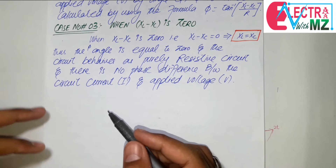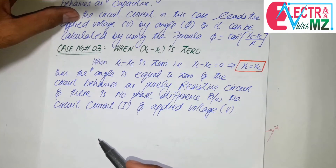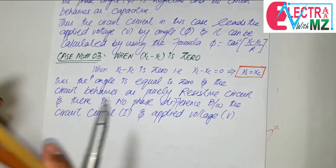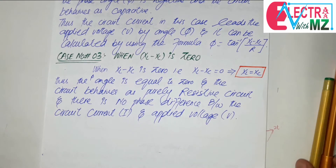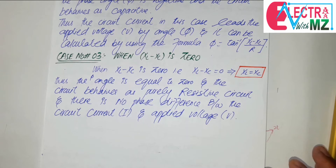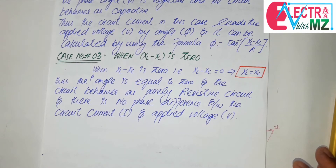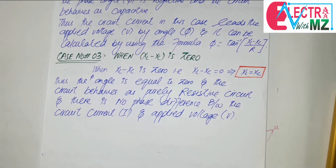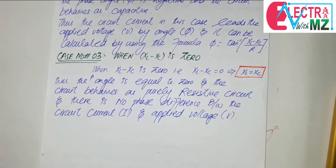So these are the three cases in case of RL or RC series circuit: if the predominant factor is inductive, then current is lagging behind the applied voltage V by angle phi. If the predominant factor is capacitive, then current leads the applied voltage by angle phi. And if the predominant factor is resistive, then there is no phase difference between voltage and current.